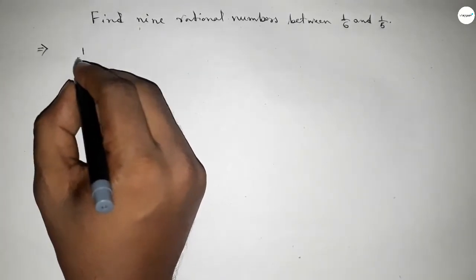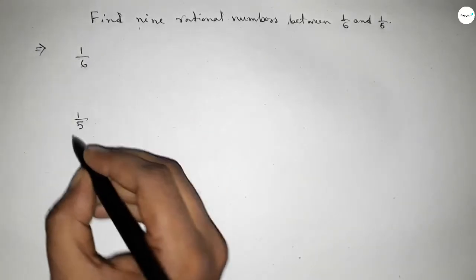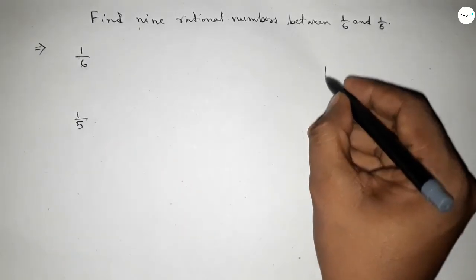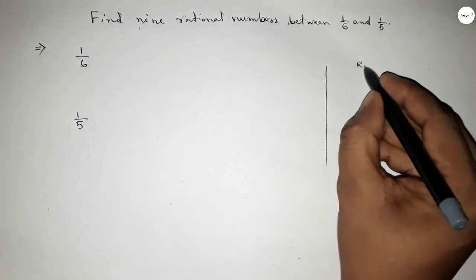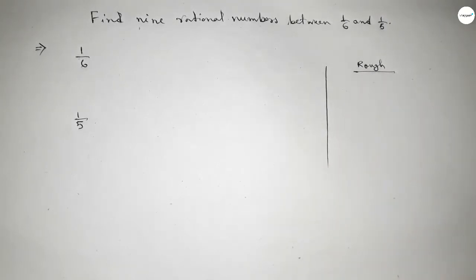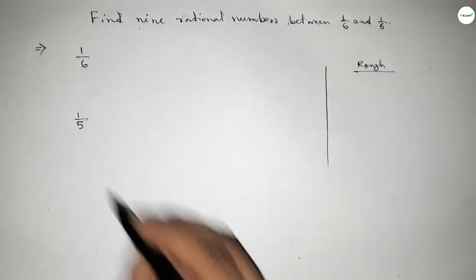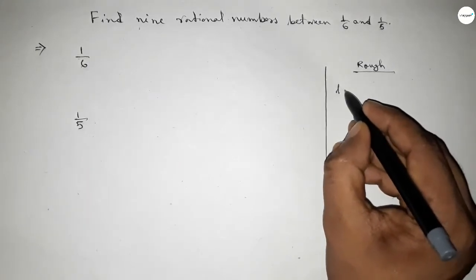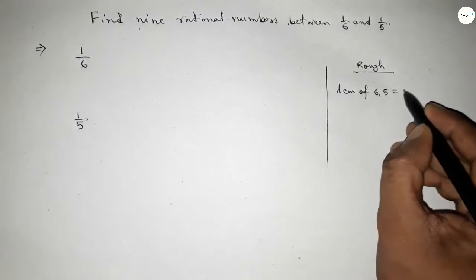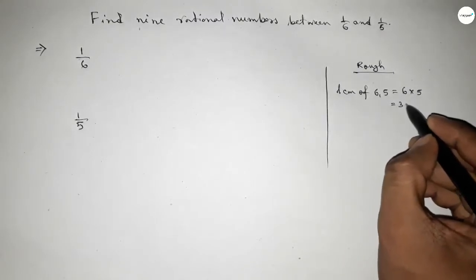Now, roughly discussing some calculations here. First, the denominators of both are not equal, so first we have to find out the LCM of 6 and 5. Their product is the LCM, so 30.